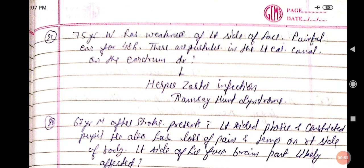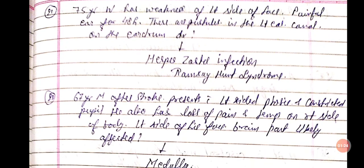A 67-year-old male, after stroke, presents with left-sided ptosis and constricted pupil. He also has loss of pain and temperature on the right side of the body, and involvement of the left side of the face. The affected part is the medulla — this is lateral medullary syndrome.